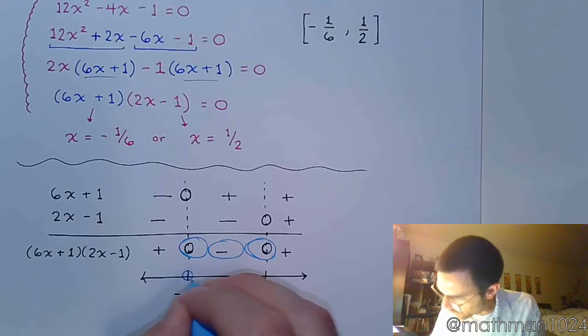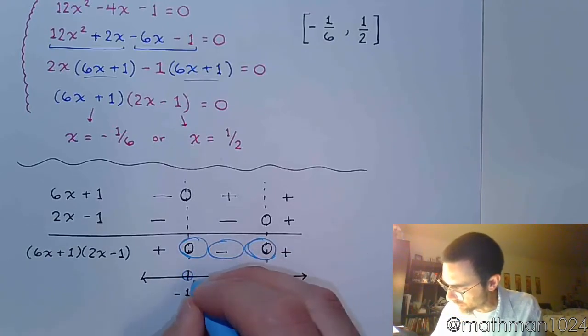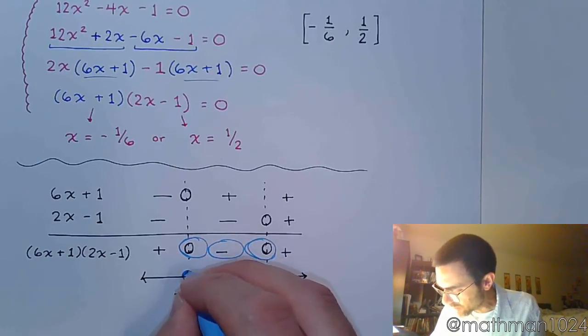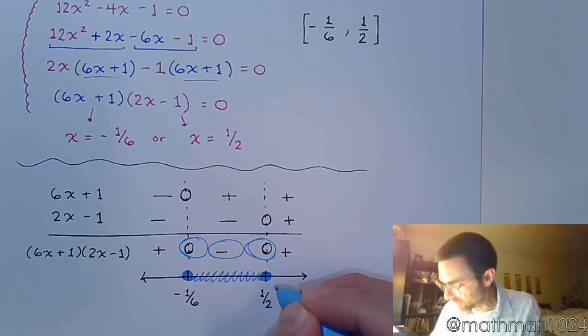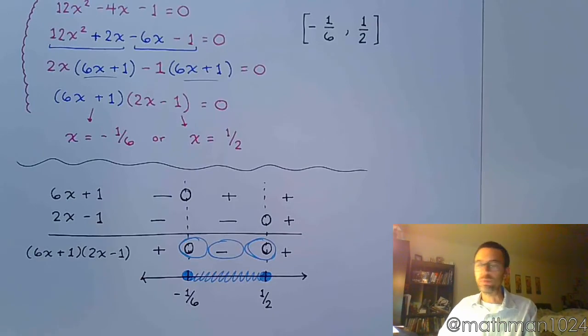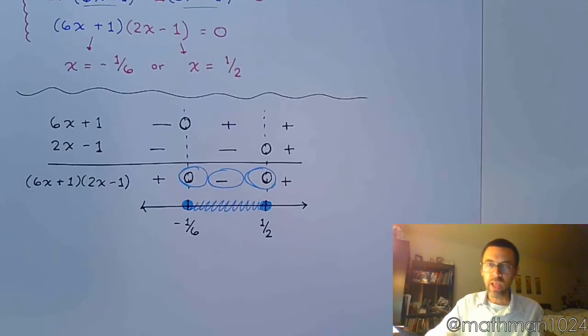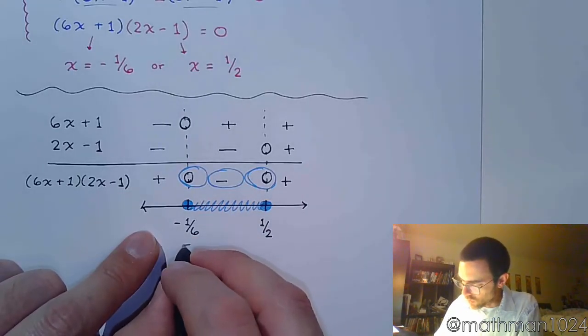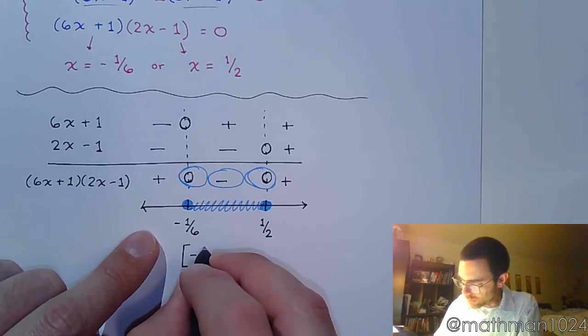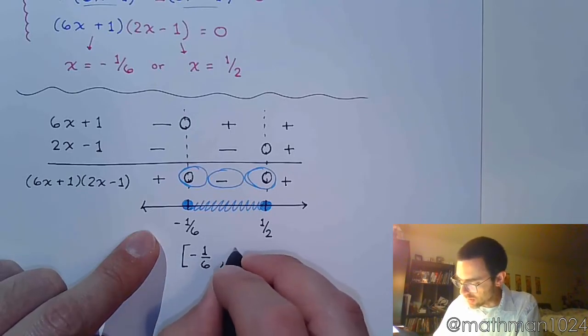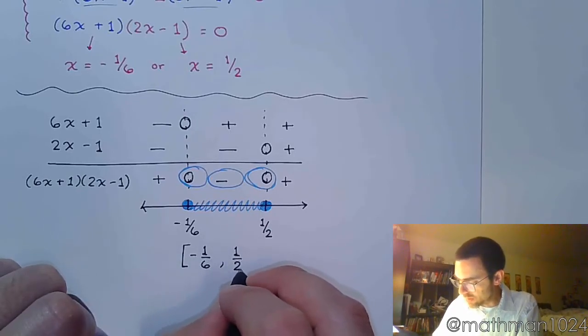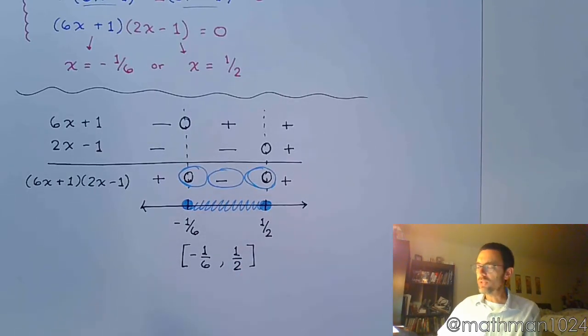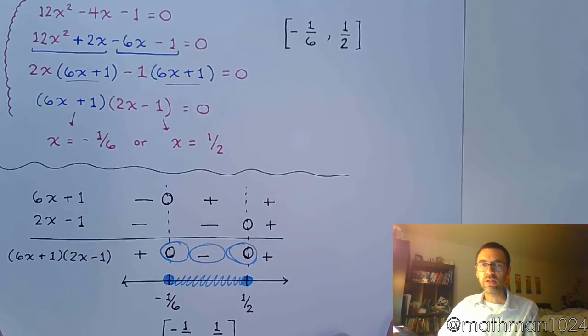And when you translate that down here to the number line, it's this region in between. And because of the equal to part, we get to fill in those endpoints. And so, from here, we write our interval notation. So, included, so that's going to be bracket, negative 1 over 6 to 1 half. Again, that's included, so that's a bracket. So, it's the same answer that we had up above. We just used a sign chart.